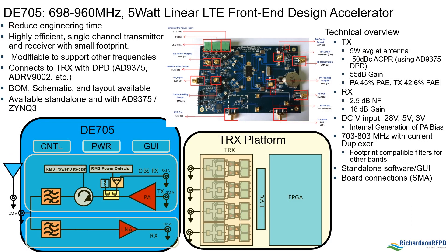Richardson RFPD has tried to augment these multi-application design accelerators with more market-specific RF front-ends, and initially designed the DE705, a 698 to 960 MHz 5W output with LNA, that will work with any 698 to 960 MHz platform with DPD. Please note that the 5W output is at the connector and takes into account all the loss between the PA and the antenna connector. It also assumes an 8 dB peak-to-average ratio signal and a 50 dB ACPR. We show its performance along with the ADR-V9002 evaluation platform in a demo at our booth. The DE705 can also be purchased with Analog Devices' ED9375 evaluation platform.